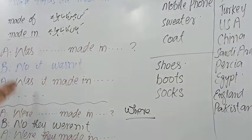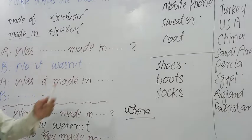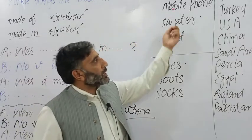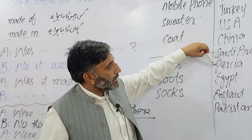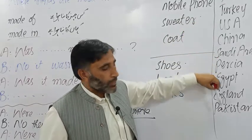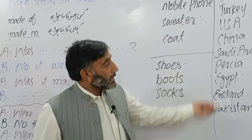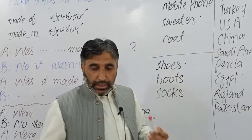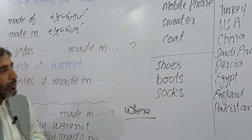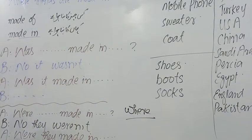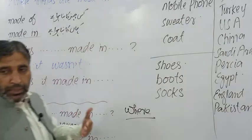Abhi haem ek game kar lenge taak ke was ya were ki mazid practice ho jaye. Maine yeh mobile phone kharida — inhee mamalik mein: India, Turkey, USA, China, Saudi Arabia, Persia, Egypt, England, Pakistan — is mein yeh ek hi jagah ke bane hue hain. Lekin aap ne yeh malum karna hai keh yeh kahan ka bana hua hai. Toh ab mujh se question karenge aur meh jawab dunga — aap guess karen.